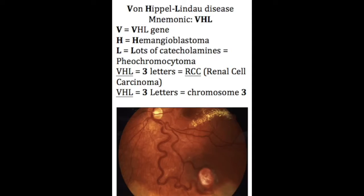It is characterized by hemangioblastomas in multiple body parts. Hemangioblastomas are commonly found in the cerebellum and they cause ataxia and headache. Retinal hemangiomas, as you can see here, are also characteristic of VHL and are diagnosed by fundoscopy.